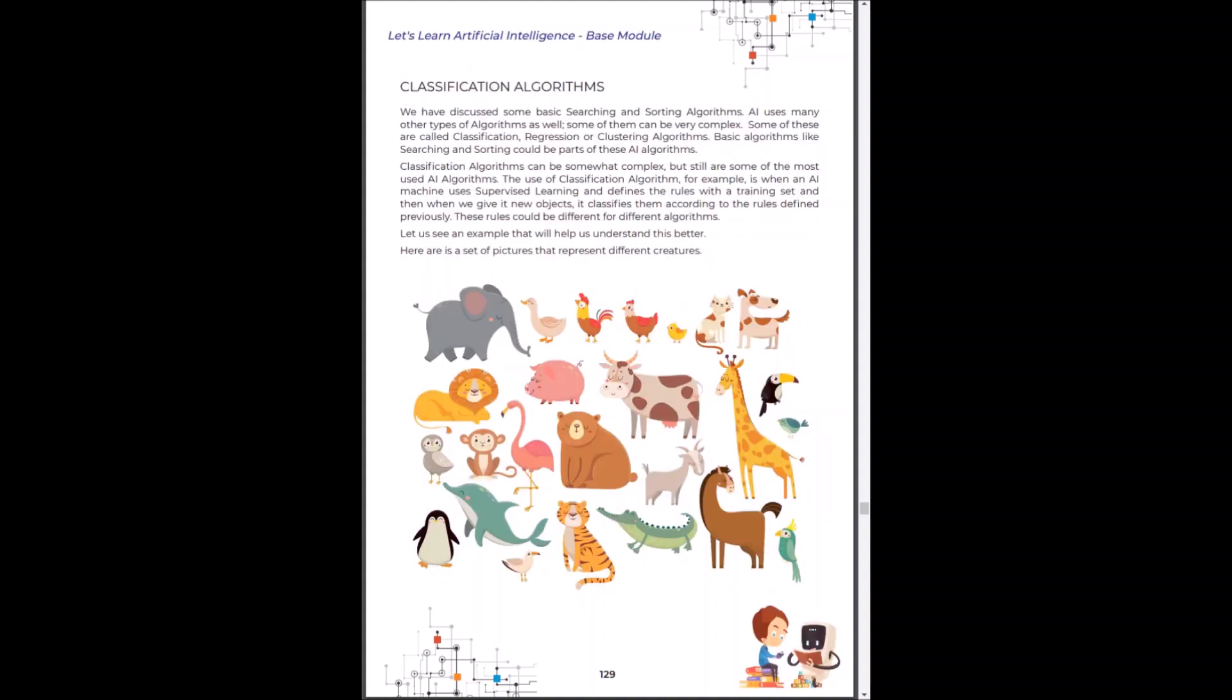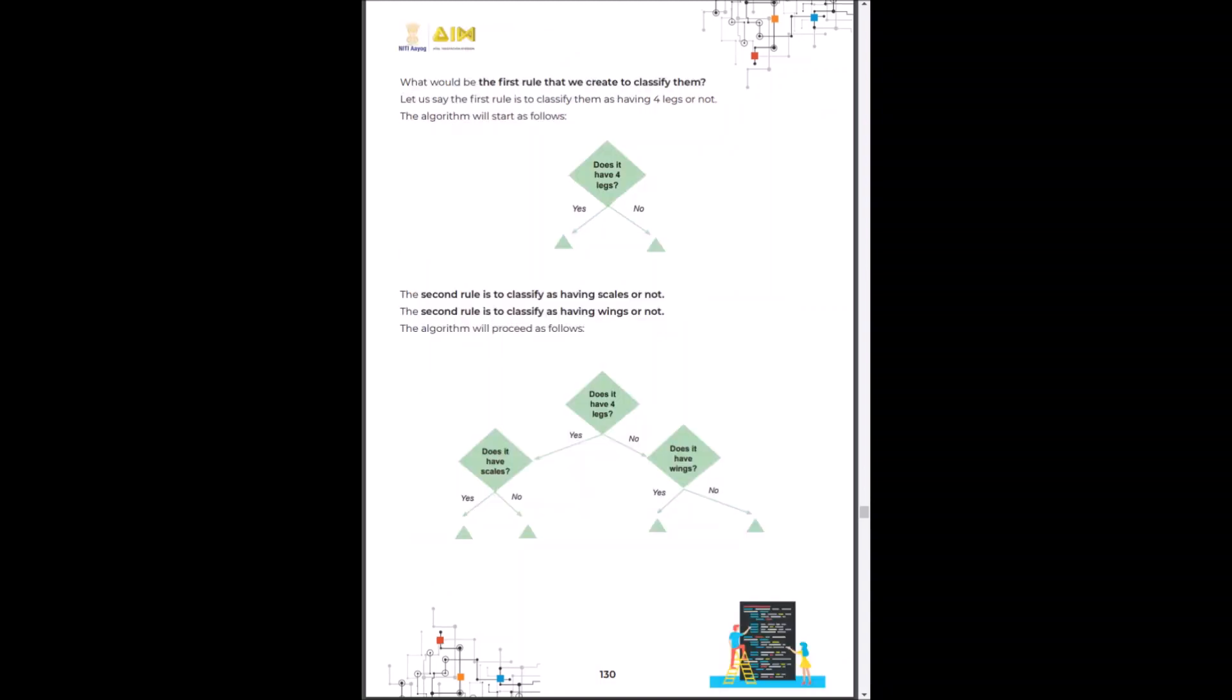Classification algorithms. AI uses many types of algorithms. Classification algorithms can be somewhat complex. It classifies various objects, data or entity as per their attributes. For example, let's look at animals. The first rule to classify animals can be, does it have four legs? Yes or no? And then we can go ahead with further classifications.